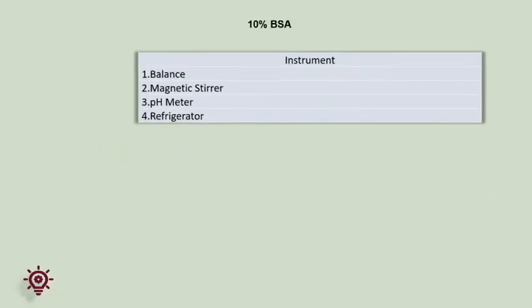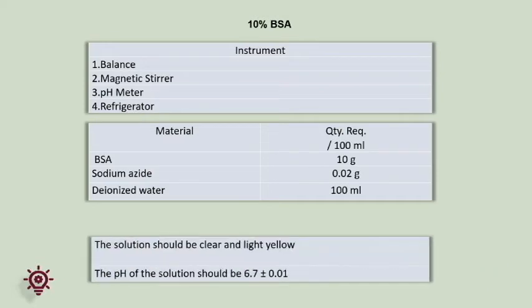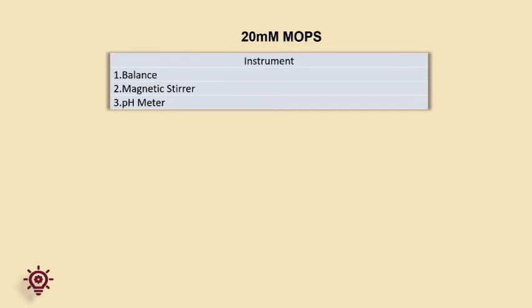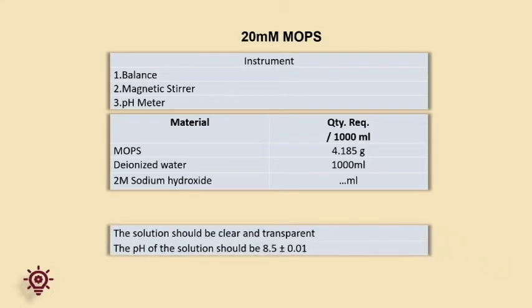Preparation of 10% BSA for blocking: dissolve the calculated quantity of BSA and sodium azide in 80% of the volume of deionized water. Make up the volume to 100%, check the pH, and store at 4 to 8 degrees in a clean bottle with appropriate labeling. The color should be clear and light yellow. The pH should be 6.7 plus or minus 0.01. Preparation of 20 millimolar MOPS: dissolve the calculated quantity of MOPS in 80% volume of deionized water and adjust the pH to 8.5 plus or minus 0.01 with 2 molar NaOH solution. Make up the volume to 100%, check the pH, and label the solution. The solution should be clear and transparent, with pH 8.50 plus or minus 0.01.